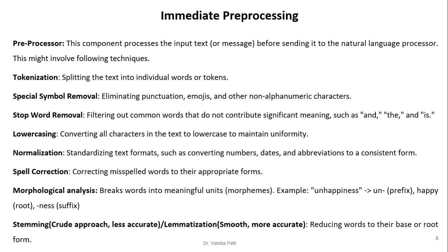Spell correction: correcting misspelled words to their appropriate forms. Morphological analysis: breaks a word into meaningful units called morphemes. For example, take the word 'unhappiness' — it is made up of 'un' (the prefix), 'happy' (the basic root word, the morpheme), and '-ness' (the suffix that gets attached).